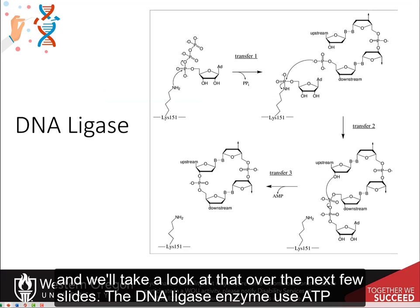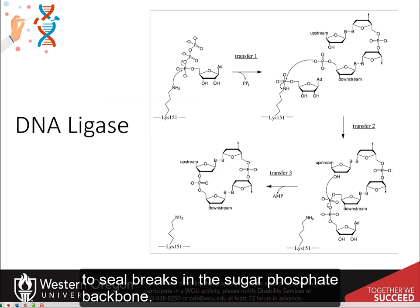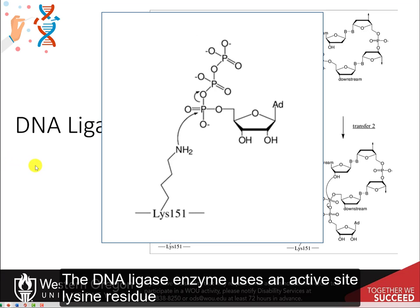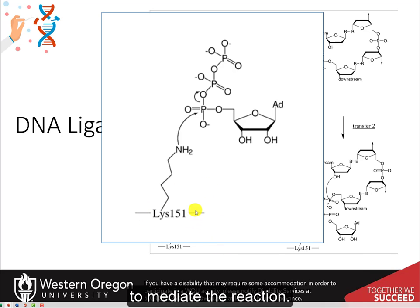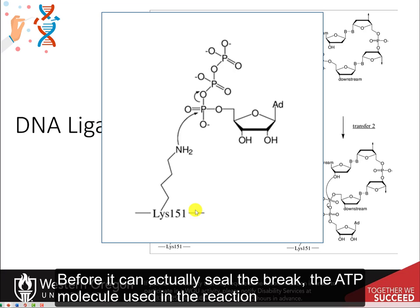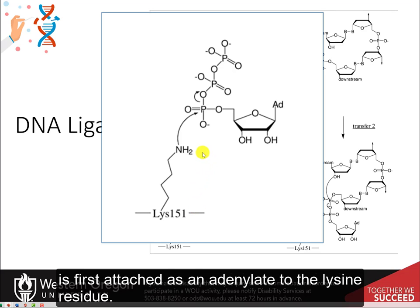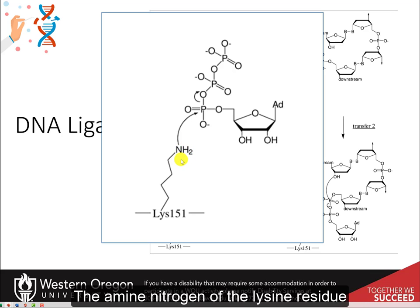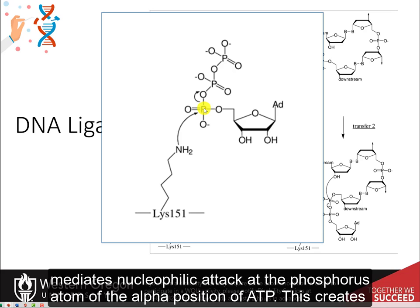The DNA ligase enzyme uses ATP to seal breaks in the sugar phosphate backbone. It uses an active site lysine residue to mediate the reaction. Before it can actually seal the break, the ATP molecule used in the reaction is first attached as an adenylate to the lysine residue. The amine nitrogen of the lysine residue mediates nucleophilic attack at the phosphorus atom of the alpha position of ATP.